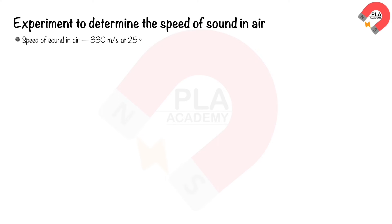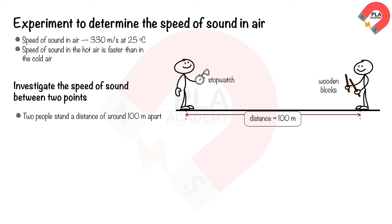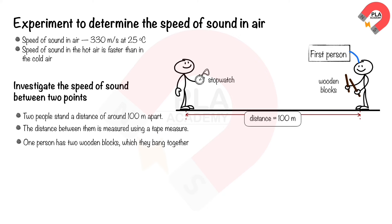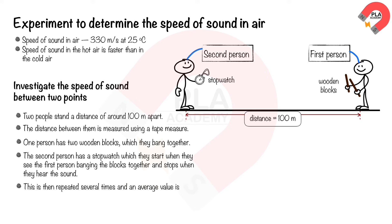An experiment to determine the speed of sound in air. The speed of sound is approximately 330 m/s at 25°C, and is faster in hot air than cold air, varying from about 330 to 350 m/s. Two people stand about 100 meters apart, measured with a tape measure. One person bangs two wooden blocks together; the second person starts a stopwatch when they see the bang and stops when they hear the sound. This is repeated several times and an average time is taken. Speed = distance / time.